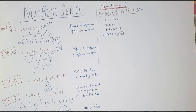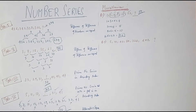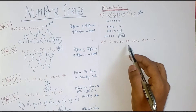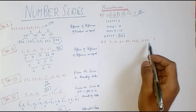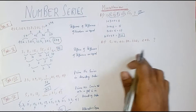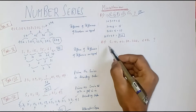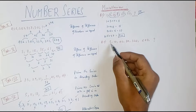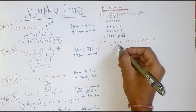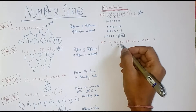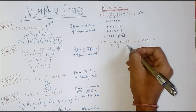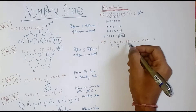Next example: 5, 10, 40, 80, 320, 640 — what is the following number? From this problem, 5 doubles to 10, so it gets multiplied by 2. Similarly, 10 gets multiplied by 4 to give 40. Then 40 multiplied by 2 gives 80.